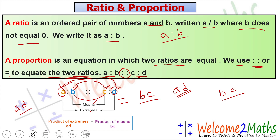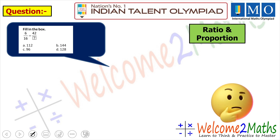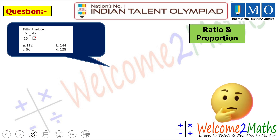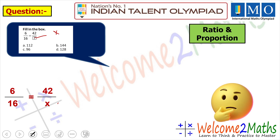Now let's solve some important questions to learn more about ratio and proportion. Our first question is: 6/16 = 42/x — find the value of x. Try to solve this first. So we write the equation as 6/16 = 42/x, and we need to find the value of x.